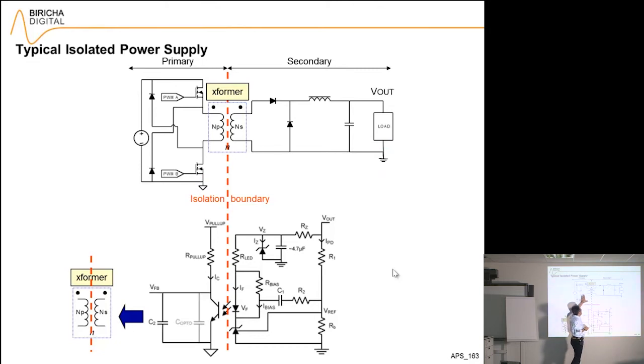So the secondary is electrically isolated from the primary, but somehow I need to get a measure of the output voltage and I need to feed it back across the isolation boundary to the primary side.